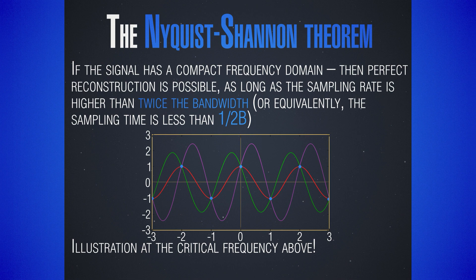This factor of two appears because the total bandwidth is the positive part of the frequency domain plus the negative part. If we have a maximum frequency b, then taking twice b is exactly what we need to encompass the full bandwidth. We can reformulate this requirement in terms of time: the sampling time, or the time step between two samples, should be less than 1 over twice b.